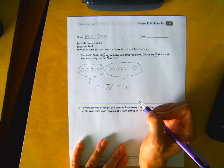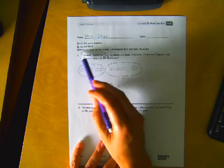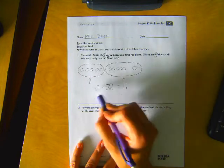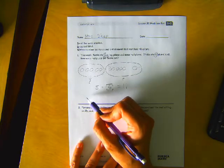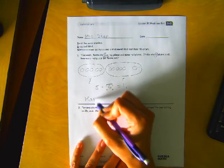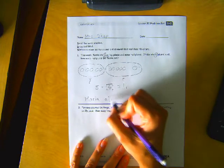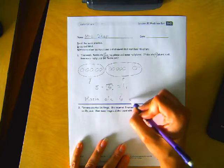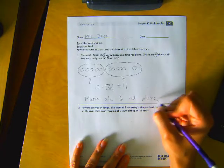So now we need a statement. So write a number sentence and a statement. So here's our number sentence. Now we need a sentence to tell what happened. So Maria ate six red plums, period.